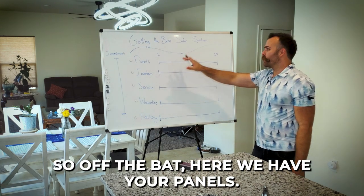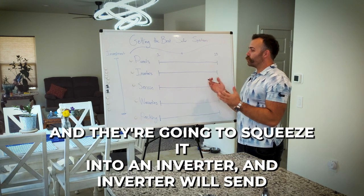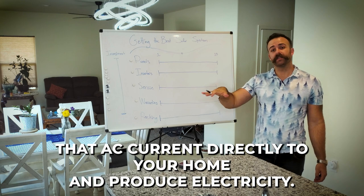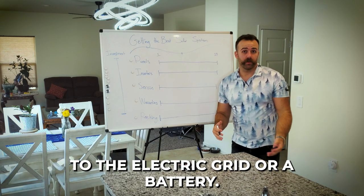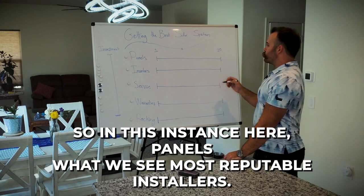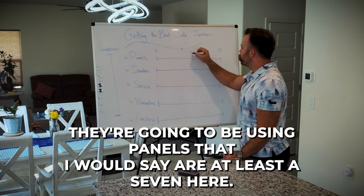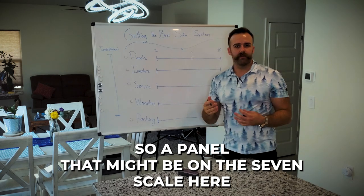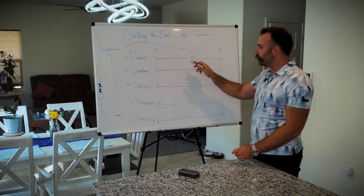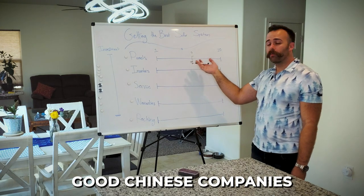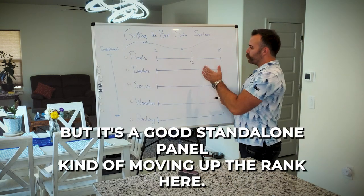Off the bat here, we have your panels. Panels are like a sponge. They're going to absorb the solar energy and they're going to squeeze it into an inverter. In this instance here, what we see from most reputable installers, they're going to be using panels that I would say are at least a seven here. So a panel that might be on the seven scale here might be like a JNCO or a JA Solar panel. These are good Chinese companies that are making a decent panel. You're not going to have nuances with it, but it's a good standalone panel.